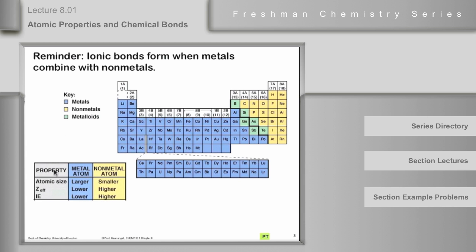As a general rule, the atomic size of metals is larger than comparable nonmetals, meaning same period. The effective nuclear charge that we talked about for metals is lower than the nonmetals in the same period.